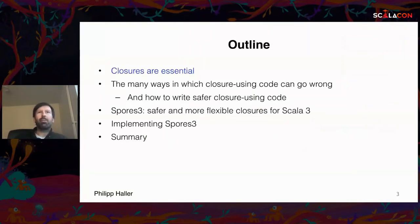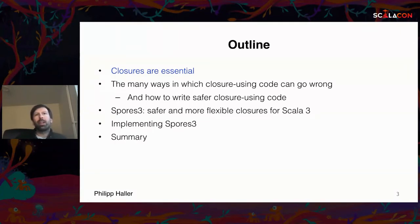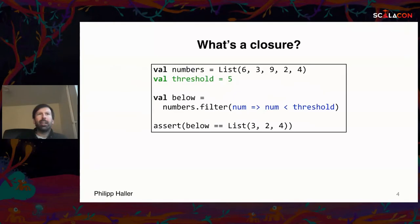I want to talk about the many ways in which code can have safety issues when using closures, how to write safer code, and then introduce a new library for Scala 3 that makes using closures both more flexible and safer. I also want to touch on some interesting parts of the implementation.